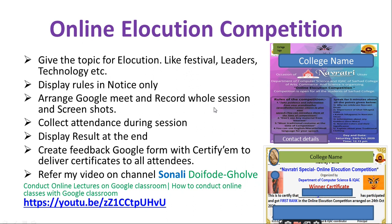Next competition is online elocution competition. Give a topic for elocution. Under criteria 5, we need to count different competitions and the number of student participants. Display the notice and all the rules in the notice only. Arrange Google Meet and record the session. Collect attendance during the session, create a feedback form, and use Certify Me to deliver certificates to all attendees. You can create a certificate using Google Slides — refer to the video on my channel for detailed information.